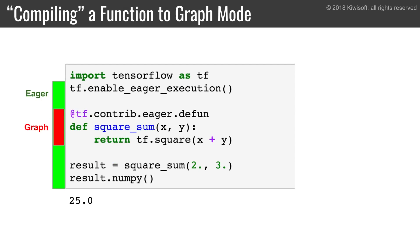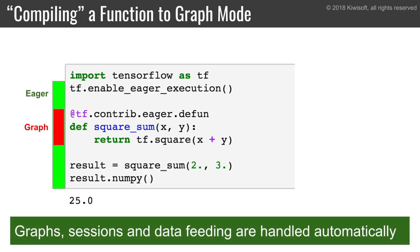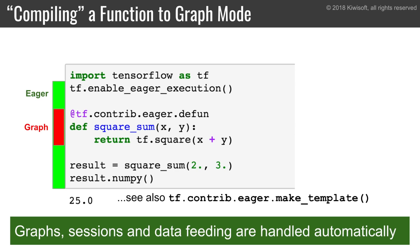A simple way to mix eager mode and graph mode is to run in eager mode and use the defun decorator to create a function that runs in graph mode. You can call this function from eager mode and TensorFlow will automatically take care of creating the graph, starting a session, feeding the data, and getting the resulting tensor. This way, you can mix the simplicity of eager mode with the power of graph mode. You can also create such a graph function using the MakeTemplate function.